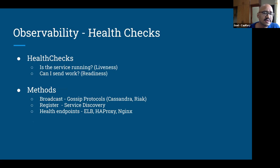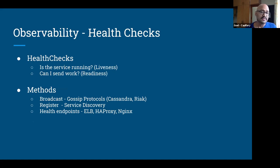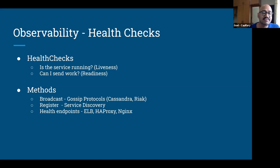On health checks: is my service running in the container world? Liveness probes. Can I send work to it — is my application ready to respond? Readiness probes. Different ways to collect health checks: in P2P distributed databases like Cassandra and Redis, you have gossip protocols — whenever a node enters the cluster, it broadcasts its availability via gossip. Service registry — when a service comes up and is ready to serve traffic, it registers itself; when going through downtime, it deregisters from service discovery. Older but reliable mechanisms include health checks via load balancer proxies and NGINX.